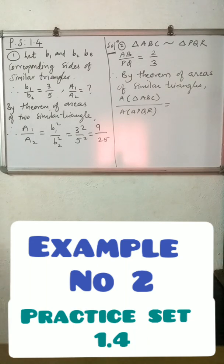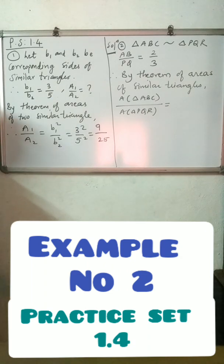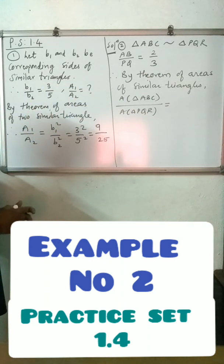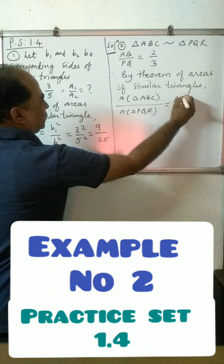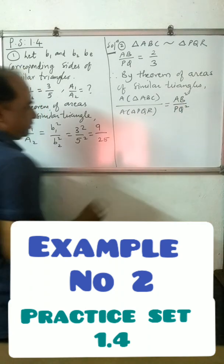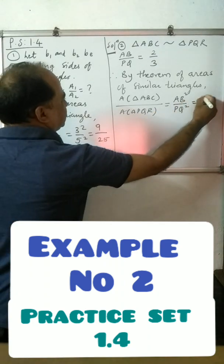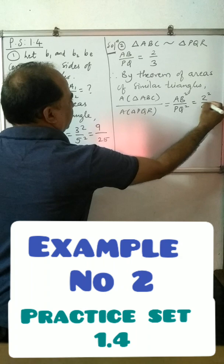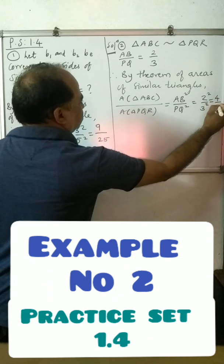Second example: if triangle ABC is similar to triangle PQR and AB upon PQ is equal to 2 to 3, then fill in the blanks. By the theorem of area of similar triangles, area of triangle ABC upon area of triangle PQR is equal to AB square upon PQ square, which is equal to 2 square upon 3 square, which is equal to 4 upon 9.